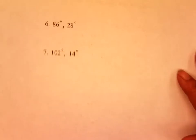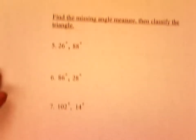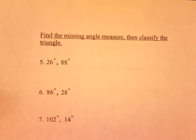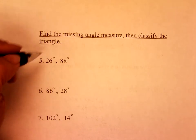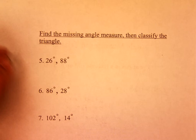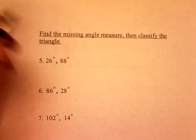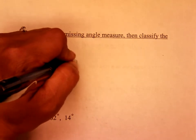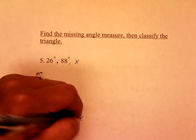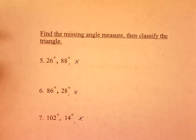Now the other side says — if you read the directions, it says find the missing angle, then classify the triangle. This is exactly like what we did on the front, except instead of having it drawn out, it just has the degrees. These have x as your unknown. Go ahead and solve these algebraically, and then we'll do the second part.